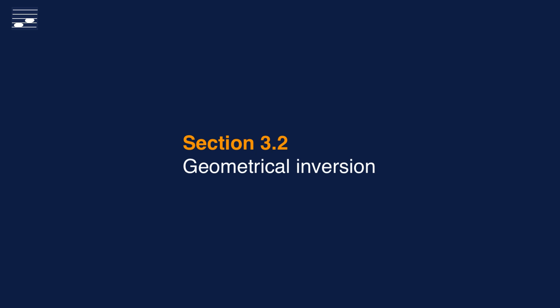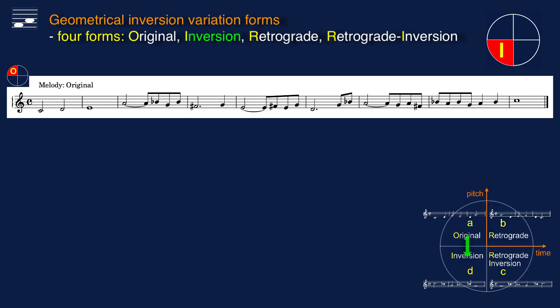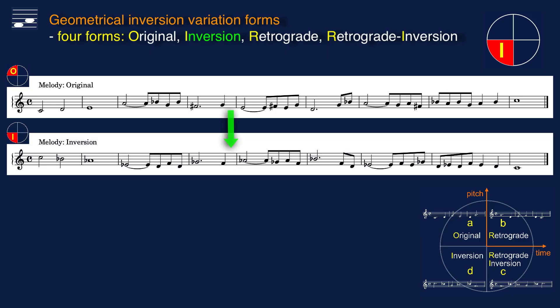We start with the first geometrical inversion operation — strict inversion. Inversion is an operation in the pitch domain and corresponds to mirroring the melody about the tonic degree axis C, applying chromatic interval steps. Thus pitch D becomes Bb, E in inversion becomes Ab, etc. Maintain the rhythm from the original form. We have obtained an overall descending melodic pattern. Musically, this corresponds to a different modal scale variant.